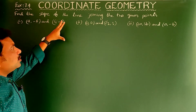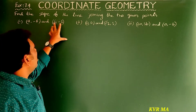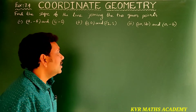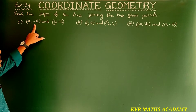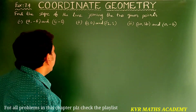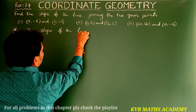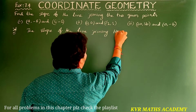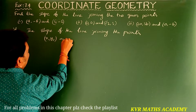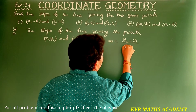In exercise 7.4, only one question is there: find the slope of the line joining two given points. In this problem, totally eight problems have been given. The slope of the line joining the points x1, y1 and x2, y2 is m = (y2 - y1) / (x2 - x1).